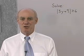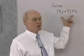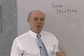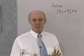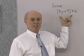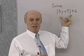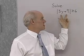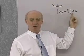We want to turn our attention now to linear inequalities that involve absolute value. Over here on the board I've written this first one: absolute value of 3y plus 9, greater than or equal to 6. We're going to use the definition for absolute value to reason our way through the solution. The absolute value of 3y plus 9 means the distance between 3y plus 9 and 0 on the number line must be greater than or equal to 6 units.